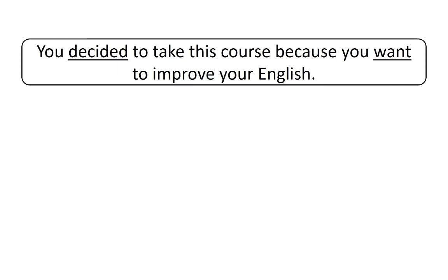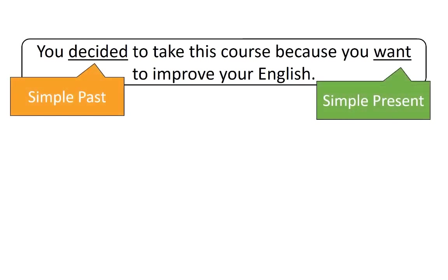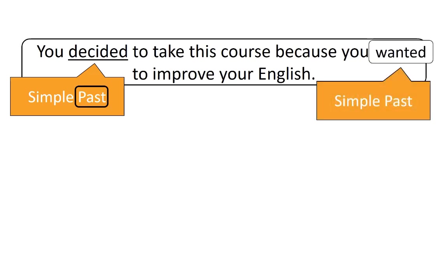But take a look at a different example: 'You decided to take this course because you want to improve your English.' Notice the verb tenses in this sentence. We have past and present, which are two completely different times. You might ask, is this possible? The answer is yes. That is because the past affects the future. You made a decision to take this course a few weeks ago. You wanted to improve your English then, so you could say this, but you also want to improve it now.